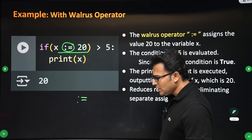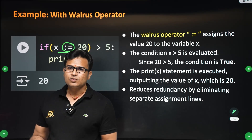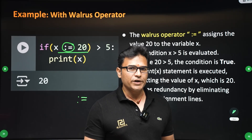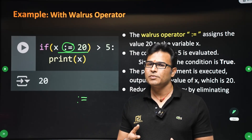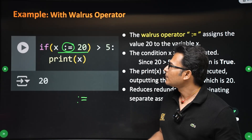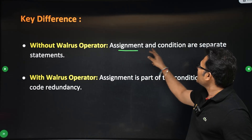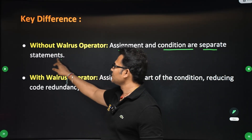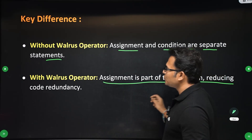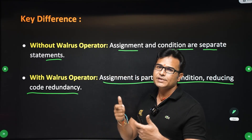I really didn't find any useful use cases for walrus — I might be wrong. I don't think we need to use it in our practice or coding; I didn't find any scenarios where it is going to be very helpful. But you can see for yourself. Without walrus, assignment and the condition are separate statements. With walrus, the assignment is part of the condition, reducing code redundancy.